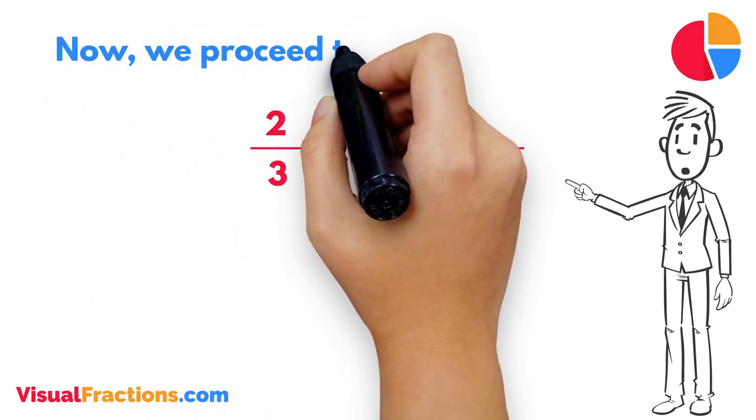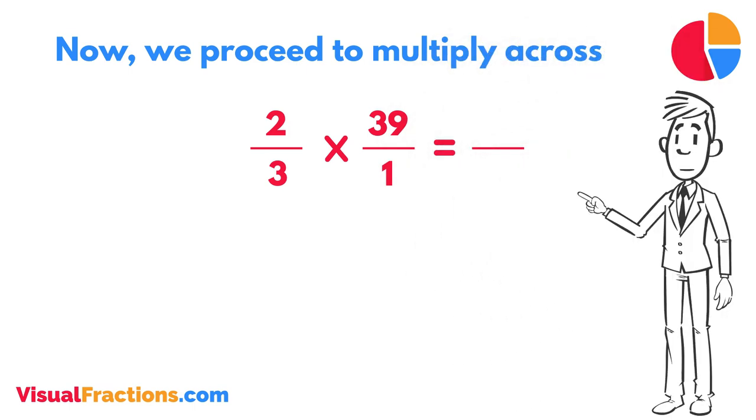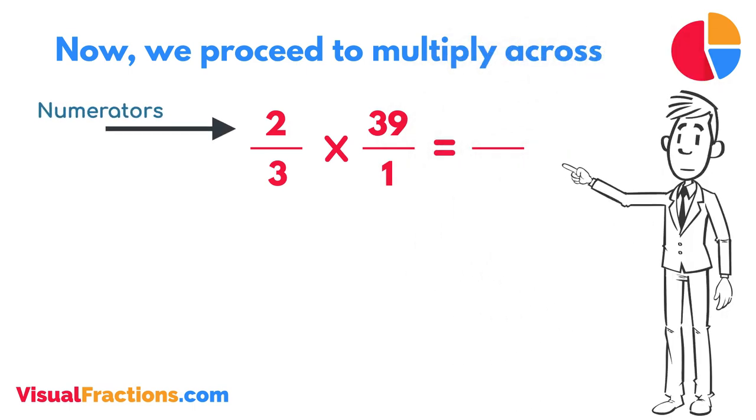Now, we proceed to multiply across. First, multiply the numerators, 2 times 39 equals 78.